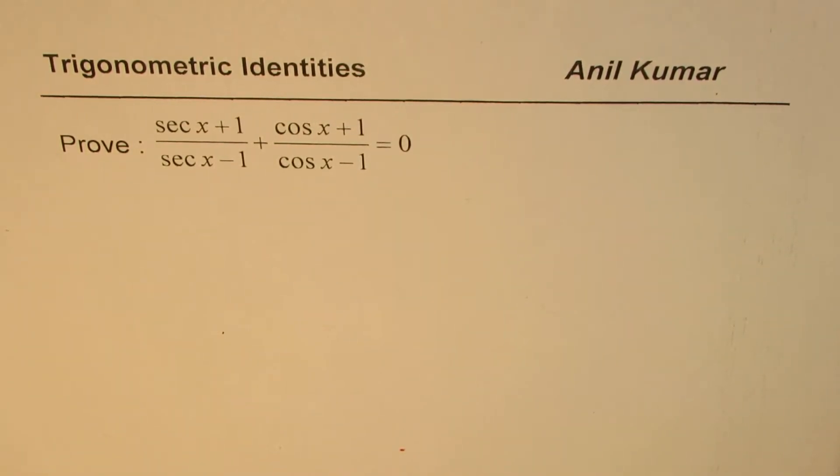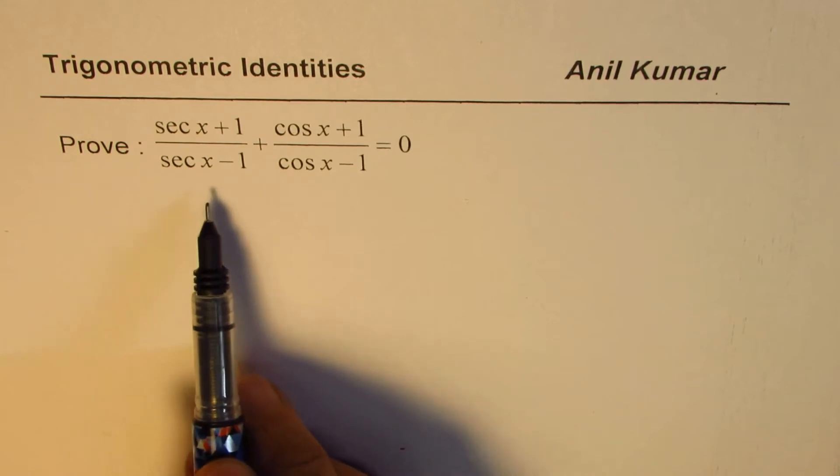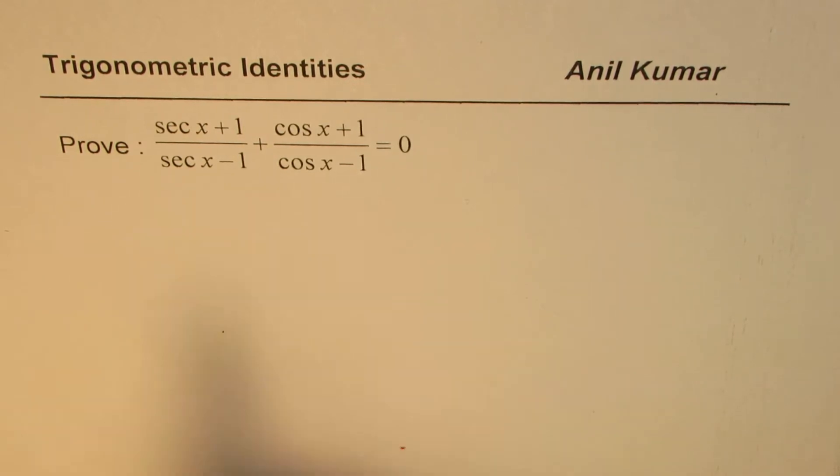I'm Anil Kumar, sharing with you a very interesting trigonometric identity. We need to prove (sec x + 1)/(sec x - 1) + (cos x + 1)/(cos x - 1) = 0.